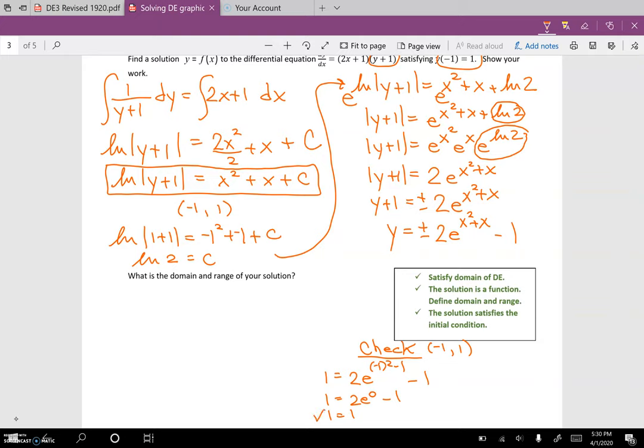Now, will the negative value work? No, of course not. Because I'd get a negative 2E to the 0 minus 1, which doesn't make sense because I'd get negative 2 minus 1. So this is not a true statement. So my solution is the positive 2E to the x squared plus x minus 1. Wow, great work, you guys.